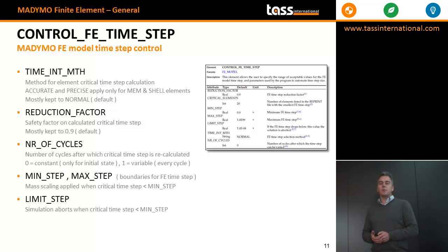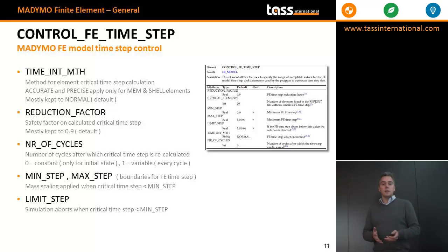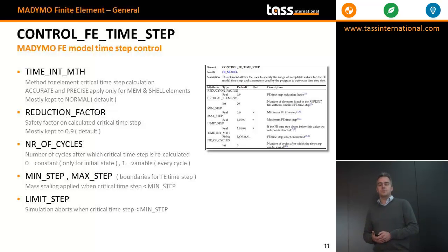The min-step and max-step parameters determine the range that you allow the timestep to vary in. For instance, a max-step of 1e-5 seconds and a min-step of 1e-6 seconds, together with a number of cycles of 1, means your timestep can effectively vary between 1e-5 and 1e-6. Finally, there is a limit step — an often much smaller timestep that, if the critical timestep falls below it, will cause the simulation to abort.